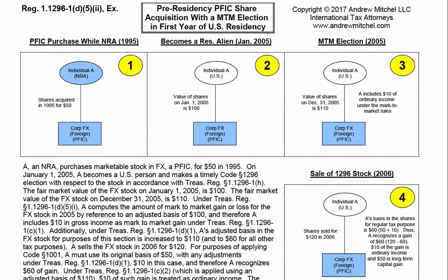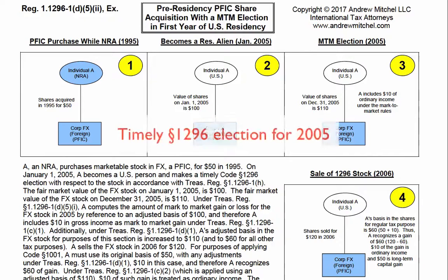At the time of this purchase, A was not a US person and had nothing to do with the US. Ten years later, in 2005, A becomes a US person and makes a timely Section 1296 election for 2005, the first year of his US tax residency.